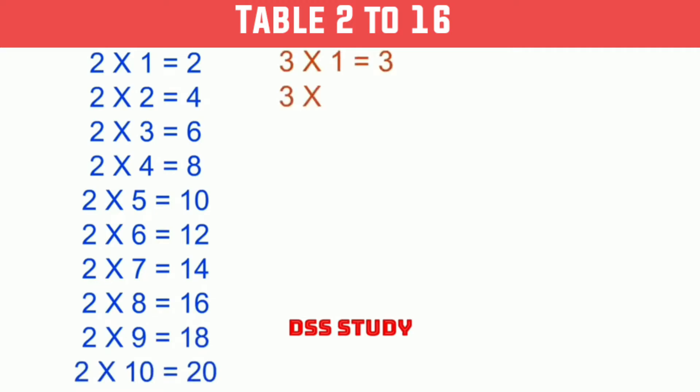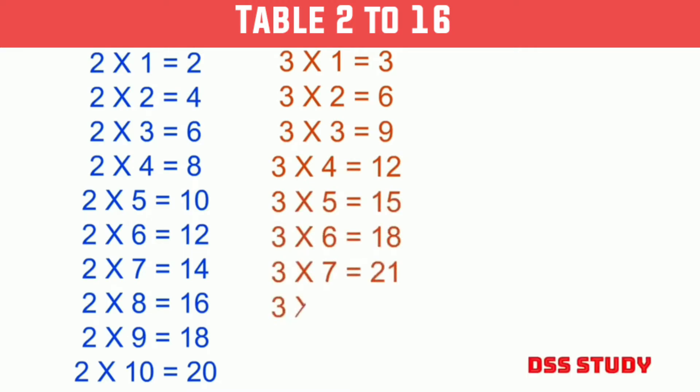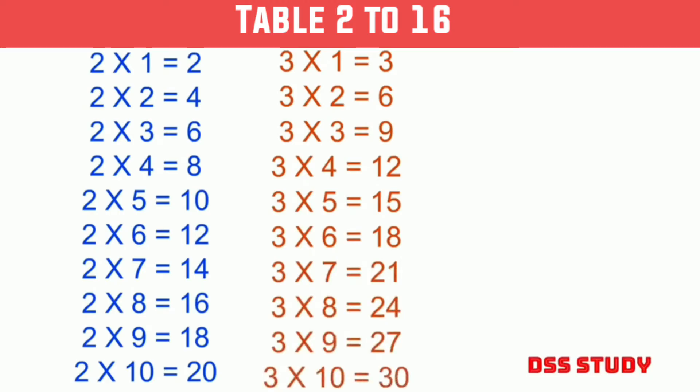3 times 1 is 3, 3 times 2 is 6, 3 times 3 is 9, 3 times 4 is 12, 3 times 5 is 15, 3 times 6 is 18, 3 times 7 is 21, 3 times 8 is 24, 3 times 9 is 27, 3 times 10 is 30.